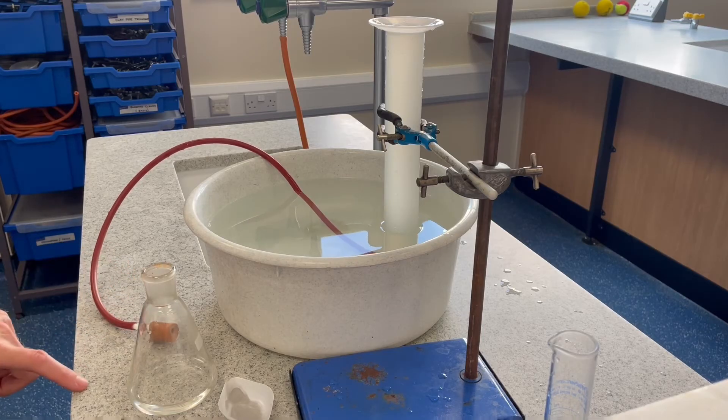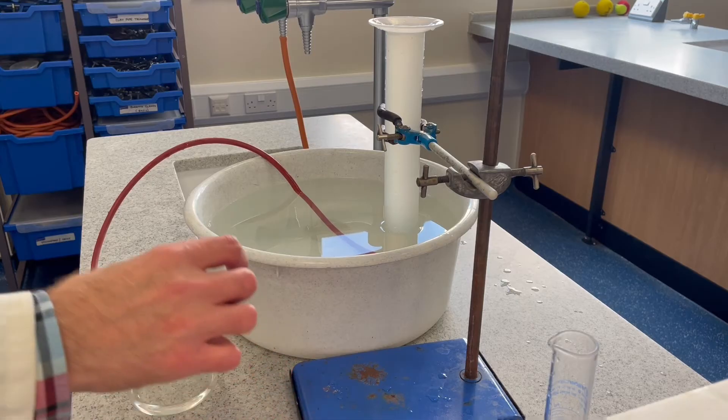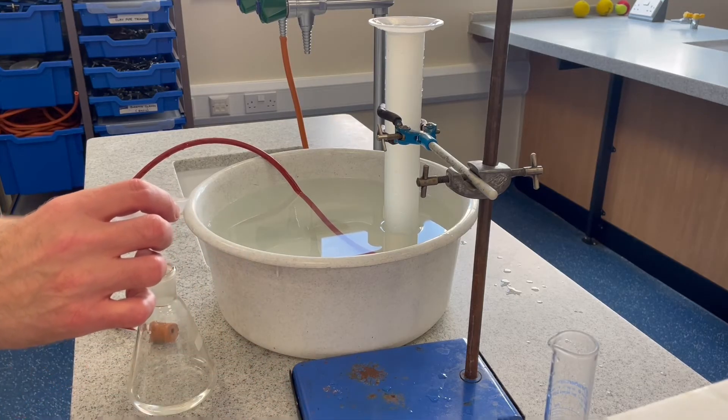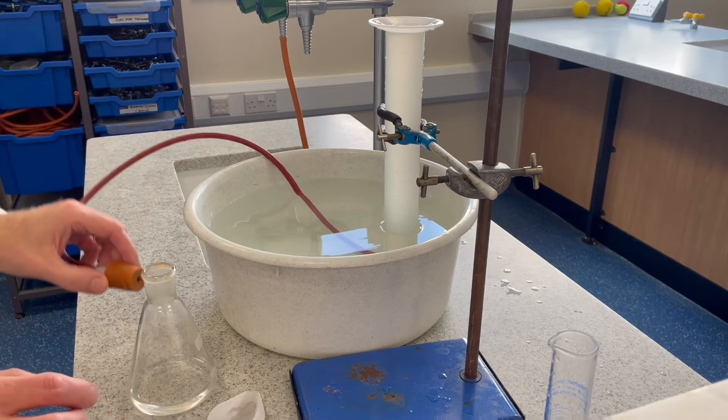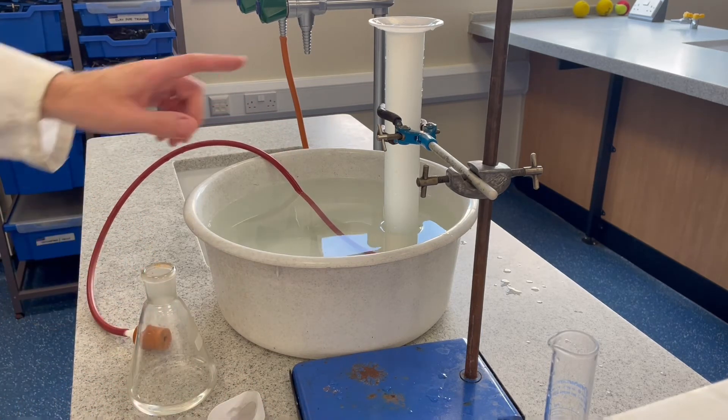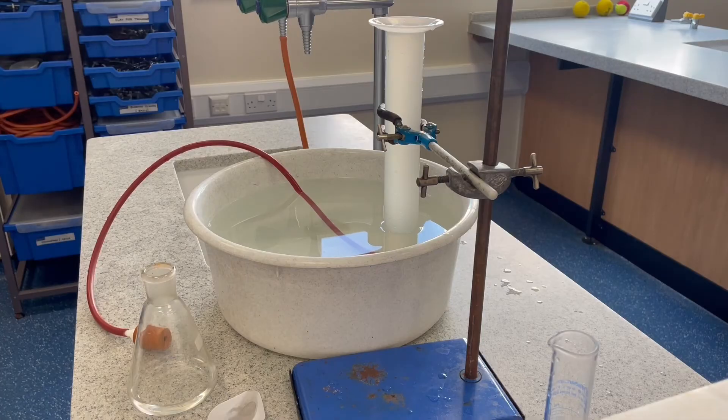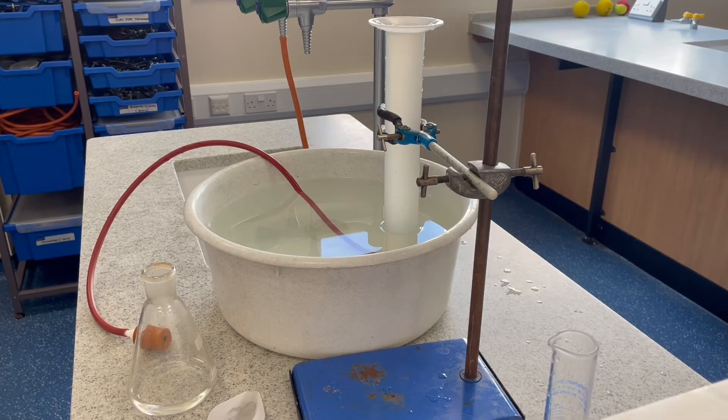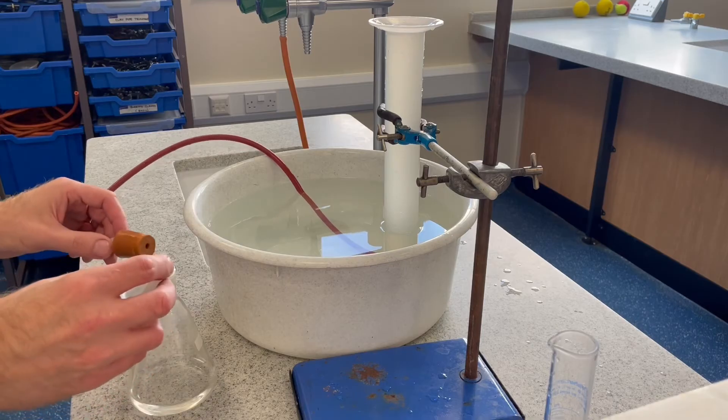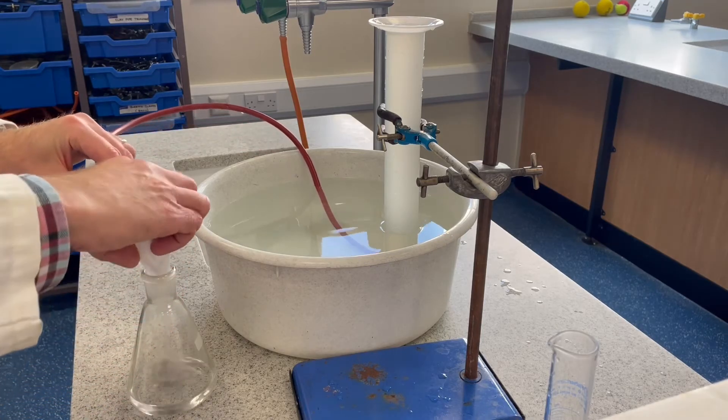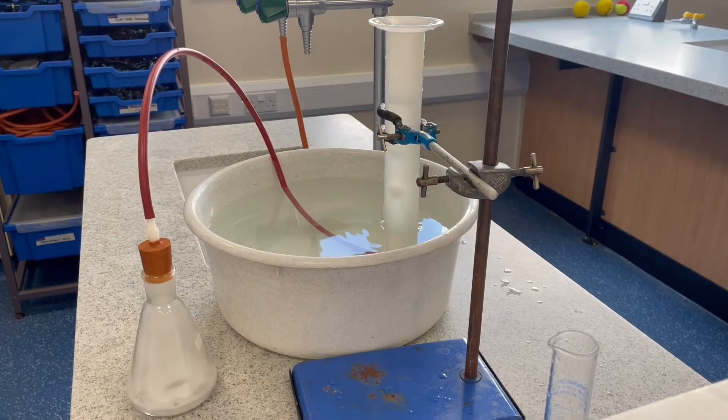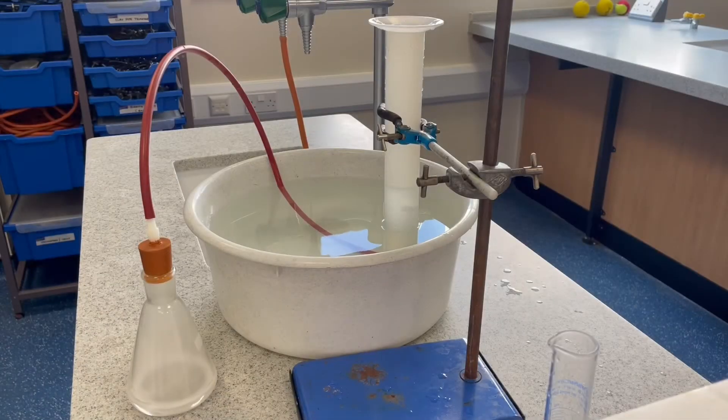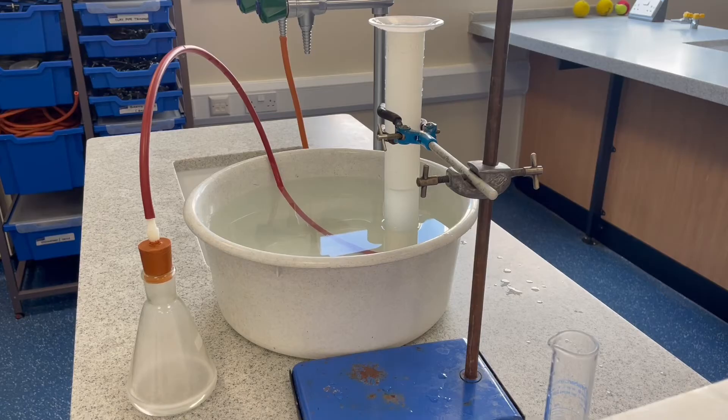My conical flask with the excess acid is sitting waiting here. When I'm ready I'm just going to put the metal X into the excess acid as quickly as possible, fit the rubber bung so I don't lose any gas, and we're just going to collect the gas that comes off the reaction. Here we go, very quickly.